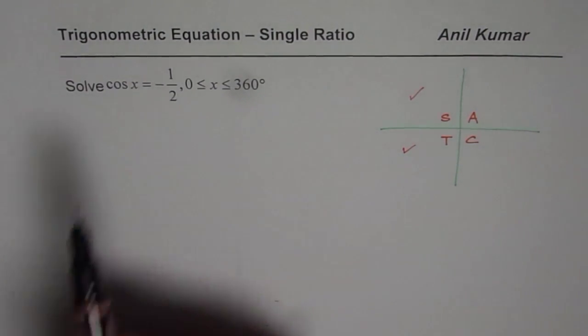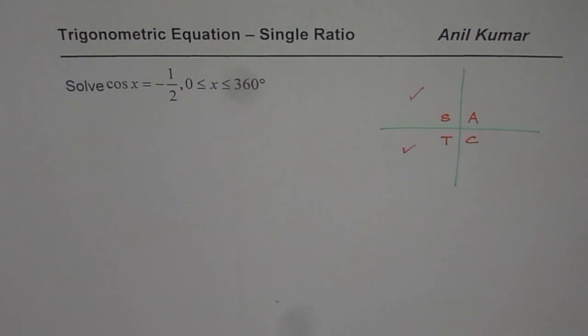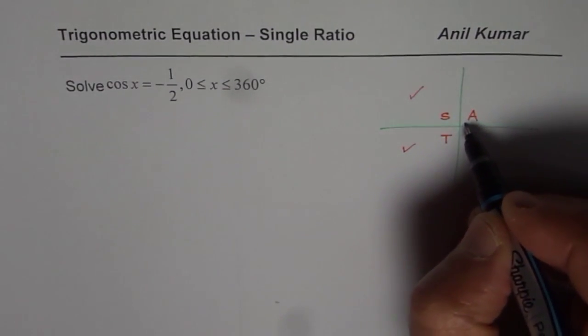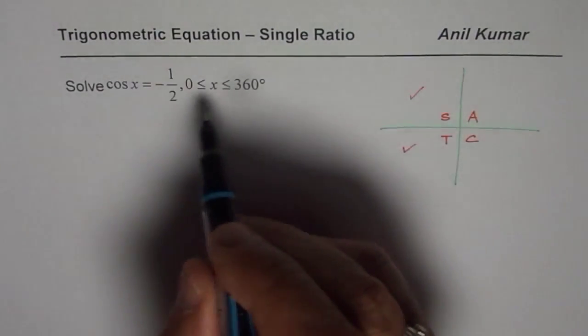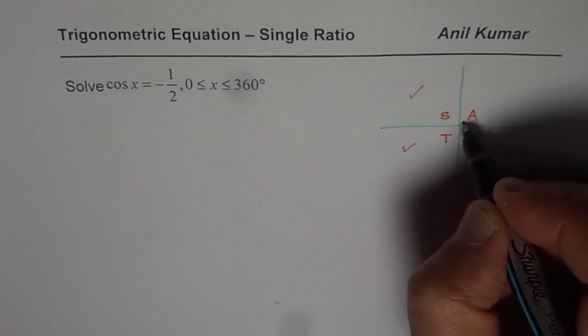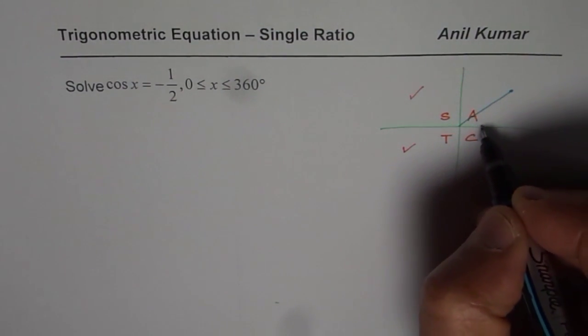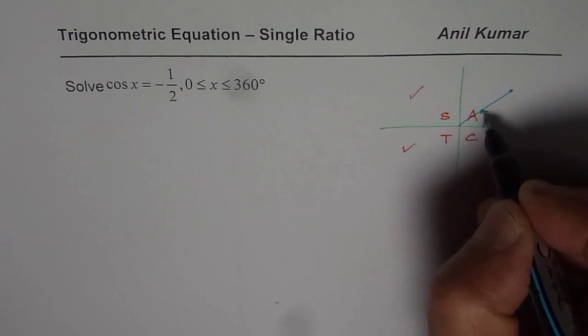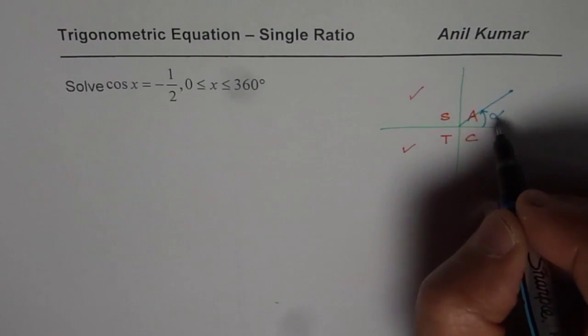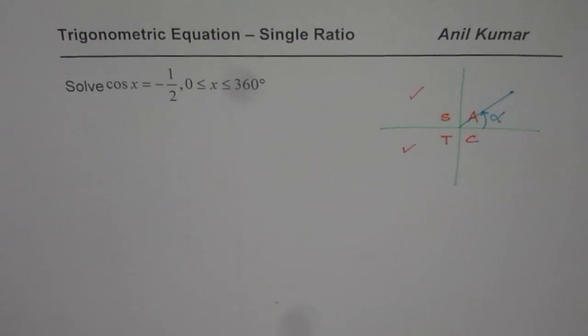We could answer this question by first finding the acute angle. So what our strategy is going to be, always for any trigonometric equation, first find the related acute angle. So we will find the angle, let me call this angle as alpha, so that cos of alpha is half. So that is my first step.